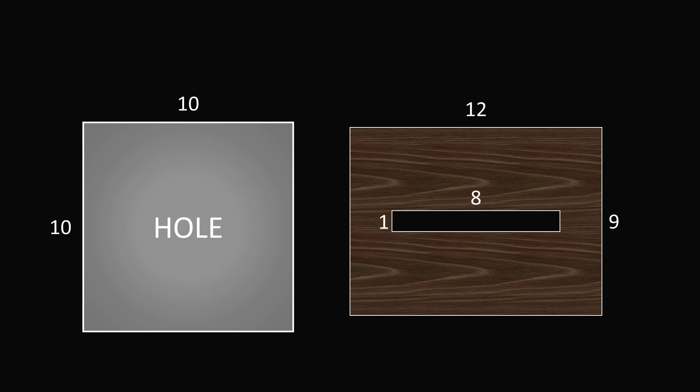Let's get started with a mathematical analysis. Let's figure out the areas of both shapes. The hole is a square with a side length of 10, so its area will be 10 multiplied by 10, which equals 100 square units. What's the area of the piece of wood? It's a rectangle that measures 12 by 9 minus a rectangle that measures 8 by 1. 12 multiplied by 9 is 108, and 8 by 1 is equal to 8, so 108 minus 8 is equal to 100. So the wood has just enough area to cover the square hole. No more, no less.